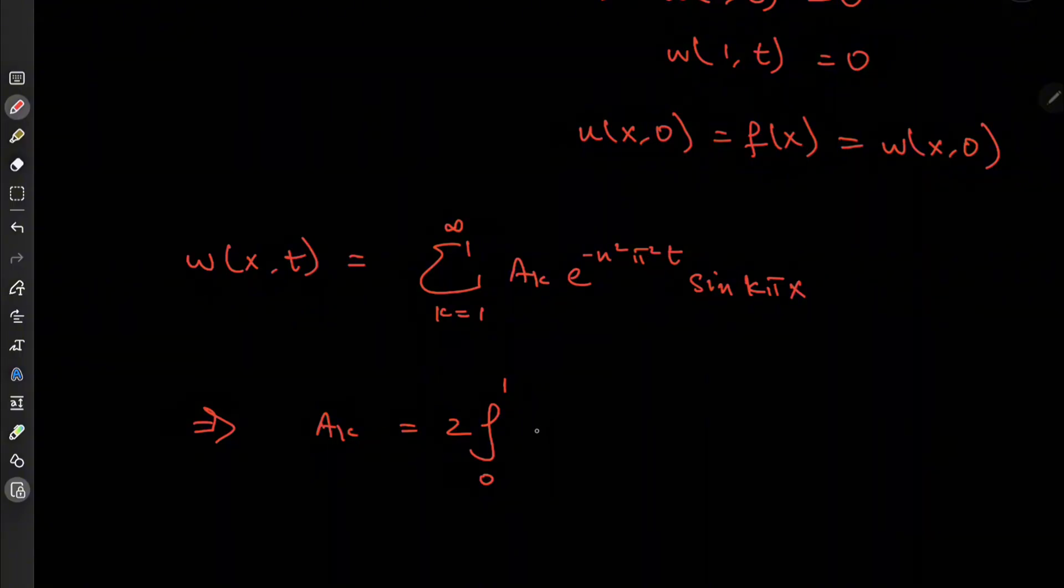So this thing equals the function w of x at 0, which is, of course, equal to our f of x times the sine of k pi x dx.